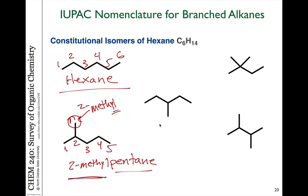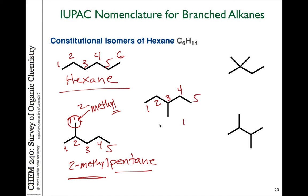Now take a look at the molecule in the middle. Counting in different directions gives four-carbon chains, but that's not the longest. The longest chain is actually five carbons — counting one, two, three, four, five — so it's also a pentane as the parent chain. There is one substituent and it's also a methyl group. The methyl is on the number three carbon of the chain, so this would be 3-methylpentane.